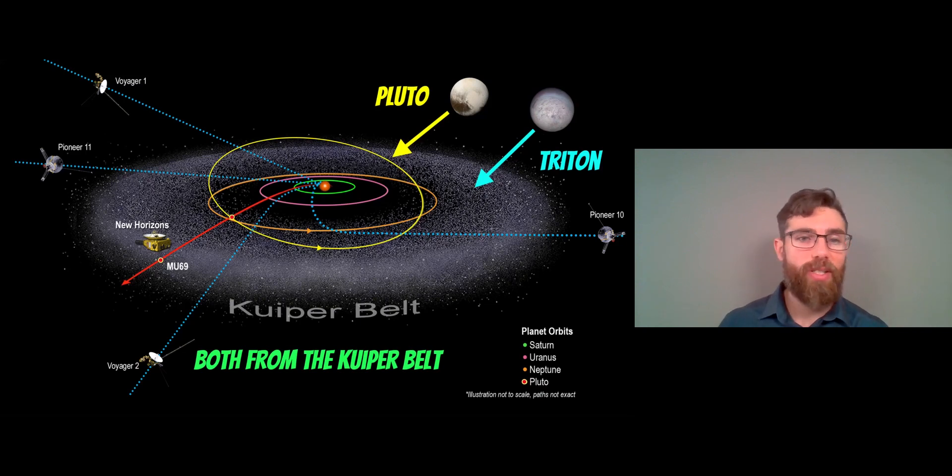Something would have sent Triton inwards to Neptune, because Neptune is at the edge of the solar system. And this Kuiper Belt goes up to Neptune's orbit, or it's just outside of Neptune's orbit, and then goes beyond.